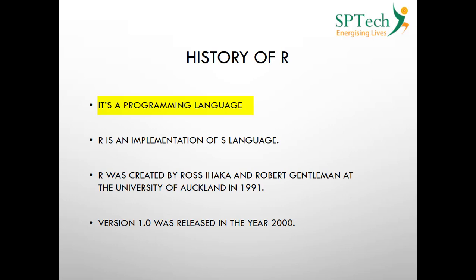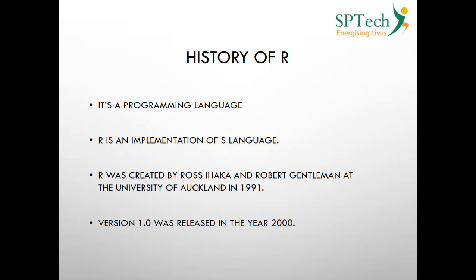Like any other programming language, R also emerged from another programming language — just like C emerged from BCPL, R emerged from a language called S. S was very predominant in the year 1970 and was used by AT&T Bell Laboratories. This S language was taken and further refined by two scientists who were also good statisticians: Ross Ihaka and Robert Gentleman.